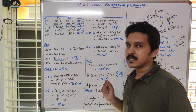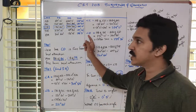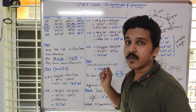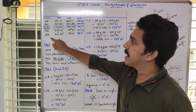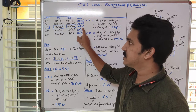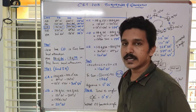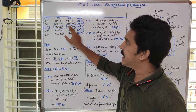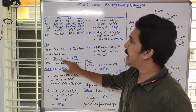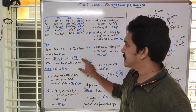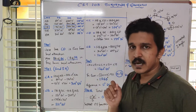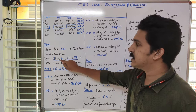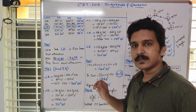In this question, we will start with first finding the difference between the forebearing and backbearing given. The forebearing minus backbearing should be 180 degrees. By checking all these lines, we will get line CD as 180 degrees. This means that line CD is free from local attraction. But in some cases, the bearings just above CD and just below CD — that is the backbearing of BC and forebearing of DE — can also be free from local attraction, but it is not always the case.